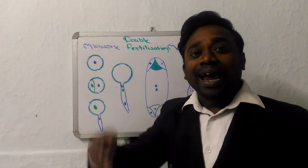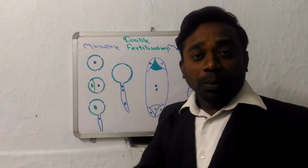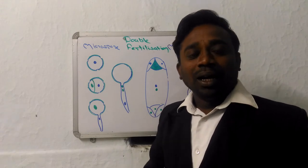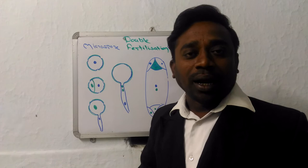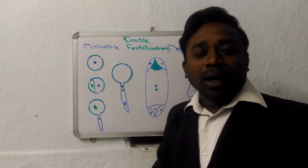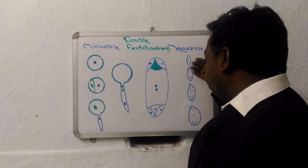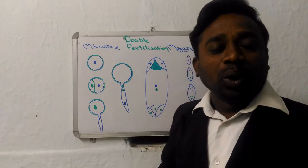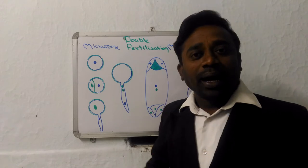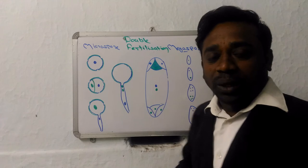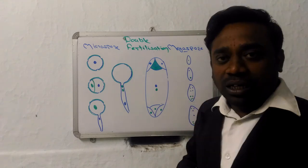Now the megaspore mother cell will undergo meiosis, will form a linear tetrad. Now three of the four daughter haploid cells will get degenerated and only one at micropylar end will be functional. And this cell at micropylar end will again undergo free nuclear division. It means only the nucleus will divide, there will be no division of cytoplasm and no wall formation.